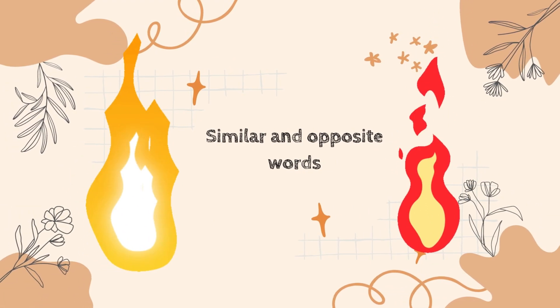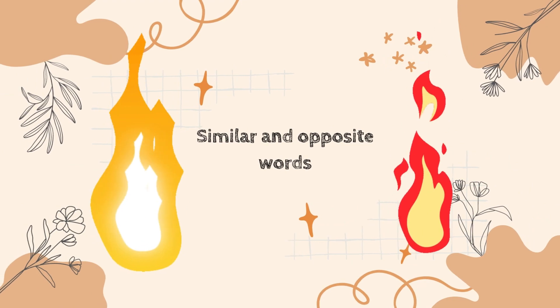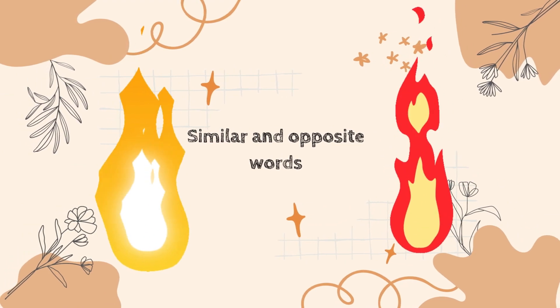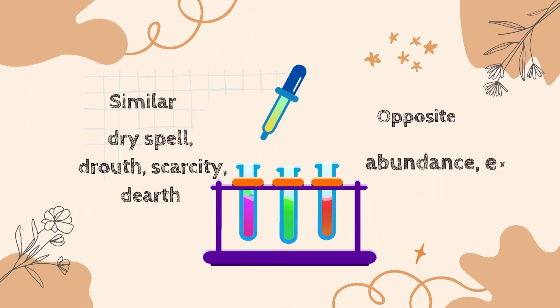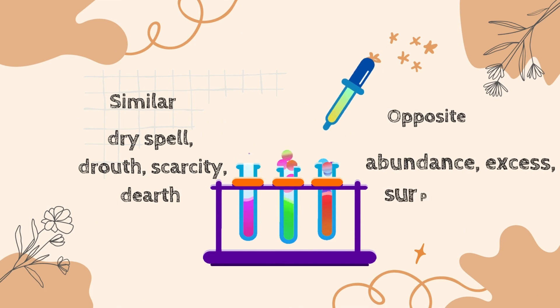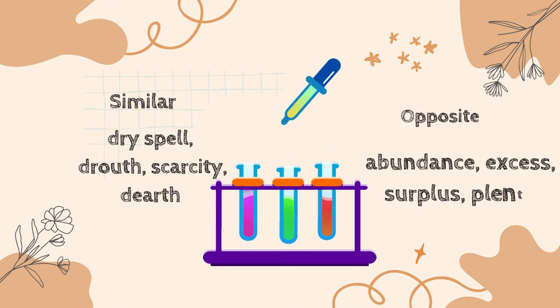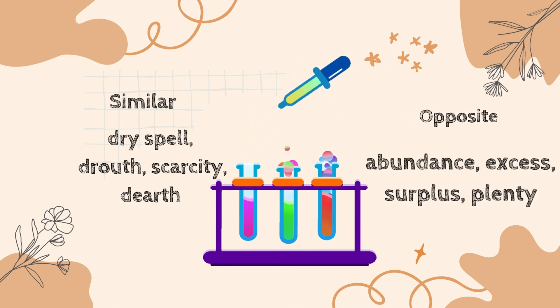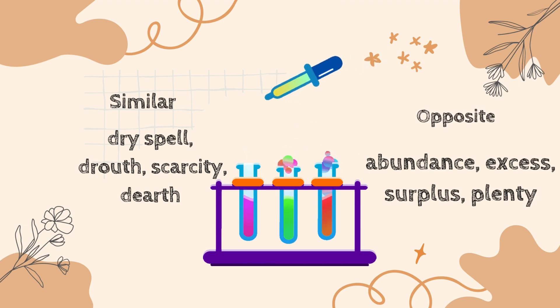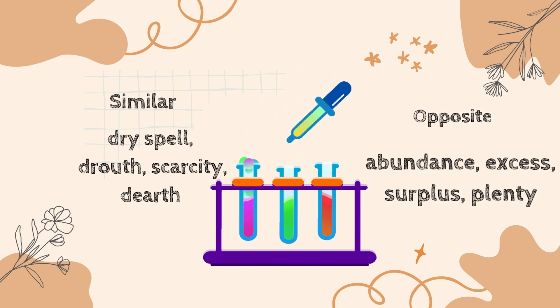Now to the important part: learning the similar and opposite words of drought. Some similar words are: dry spell, drought, scarcity, or dearth. Some opposite words are: abundance, excess, surplus, or plenty. Learn them as they are important.